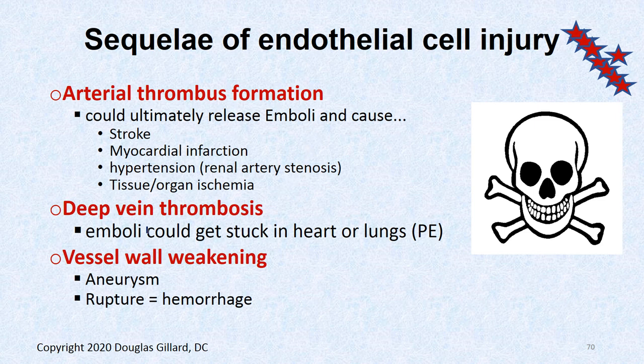A deep vein thrombosis — say in the femoral vein — normally cannot cause a stroke in a person with a normal heart. Follow the path: that clot breaks loose, travels through the venous system, and ends up stuck in the microcirculation of the lungs. Unless you have a patent foramen ovale or patent ductus — we'll talk about that — it cannot cross to the arterial side and cause a stroke.